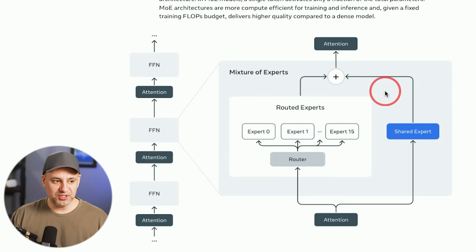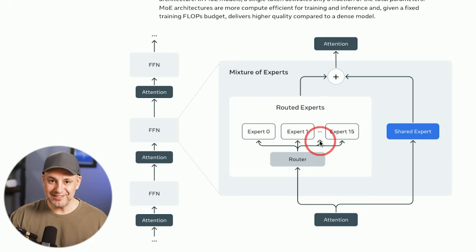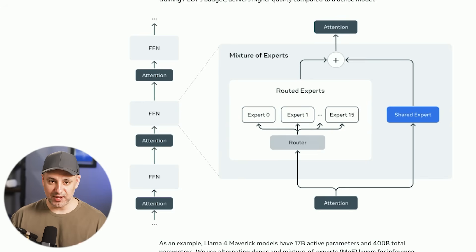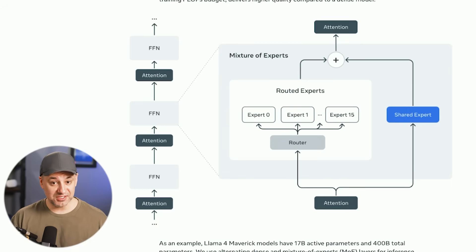This graph explains it well. Every time a request comes in — so you ask it to do something — it activates two, three, or four different experts depending on what's most relevant, instead of having all of it active at once. This process keeps high performance while making the whole thing faster and more efficient. Those 17 billion active parameters can actually run entirely on a single NVIDIA H100 GPU, so it's a lot more resource-friendly for its size and performance, requiring only a single GPU.